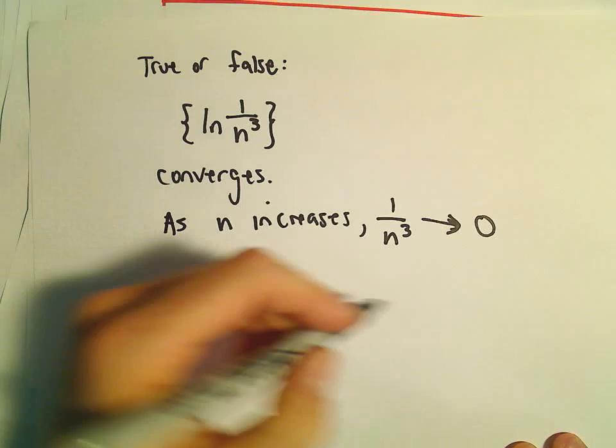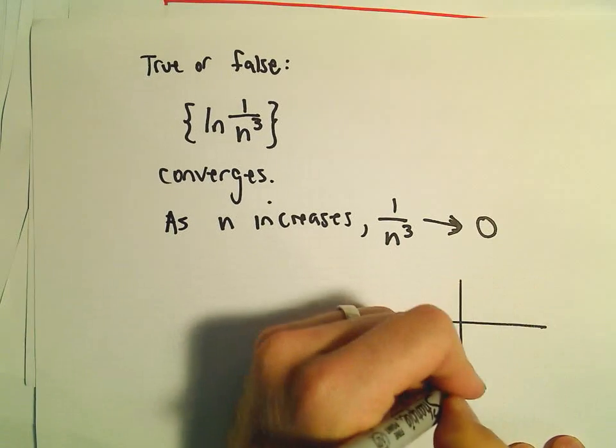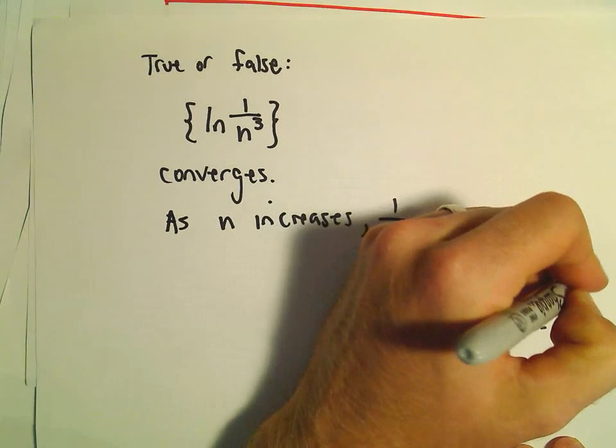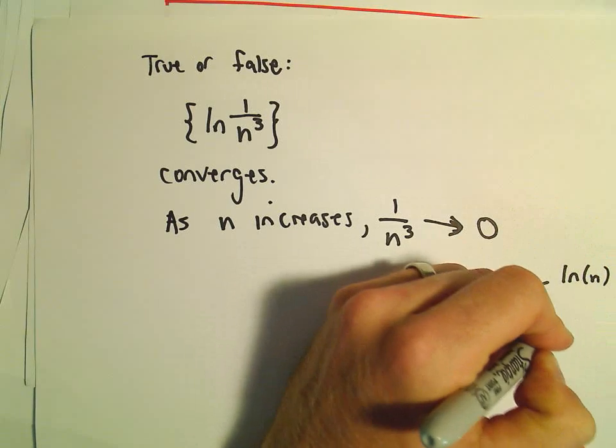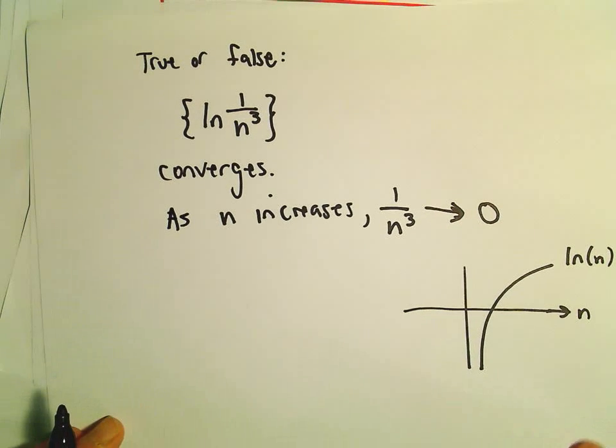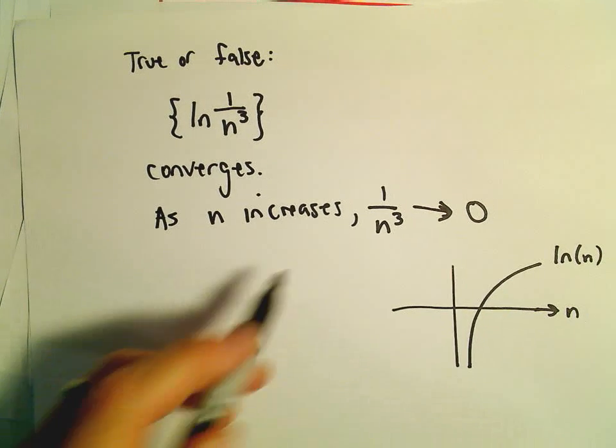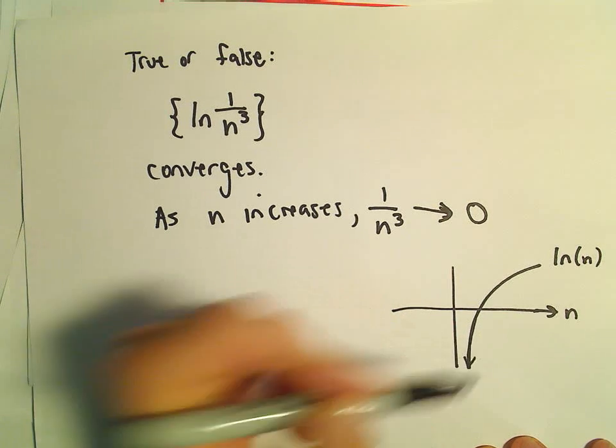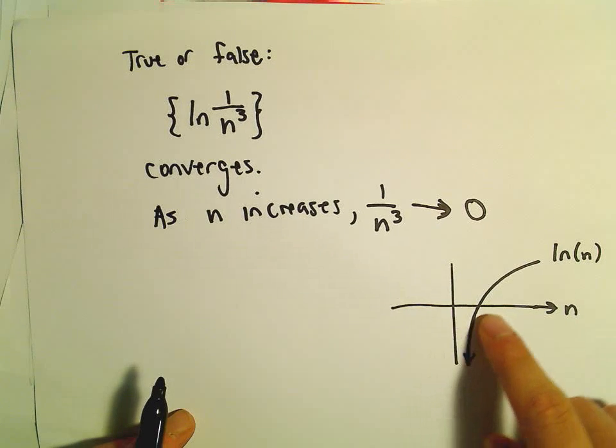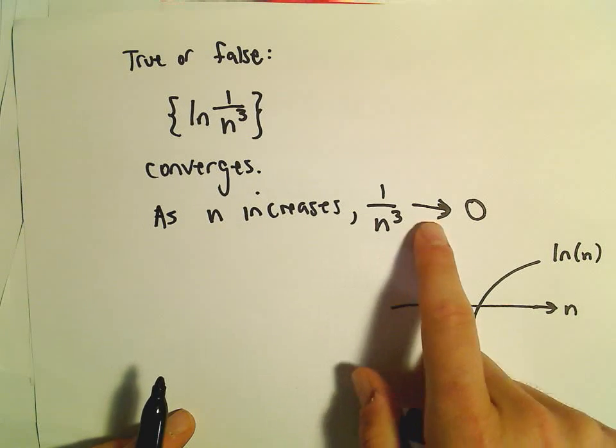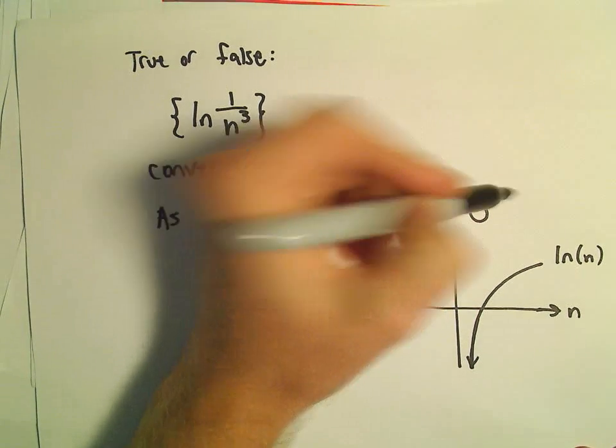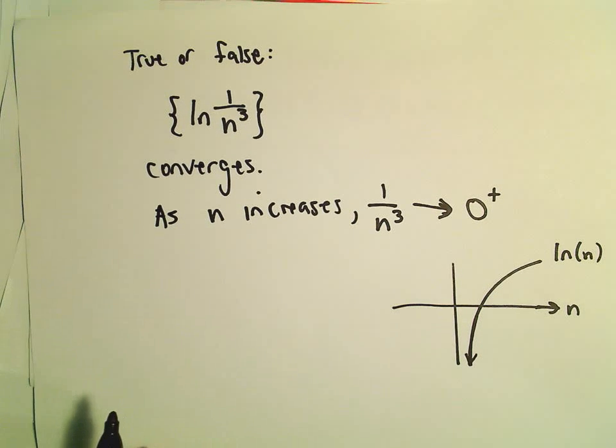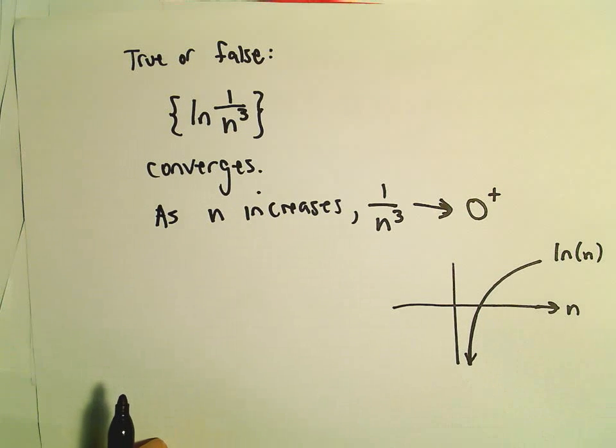And if you think about the graph, the natural logarithm, here's our natural logarithm graph. As the input gets closer and closer to 0, if you just want to think about it in terms of limits, as 1 over n to the 3rd approaches 0 from the right side, the natural logarithm simply goes down to negative infinity.